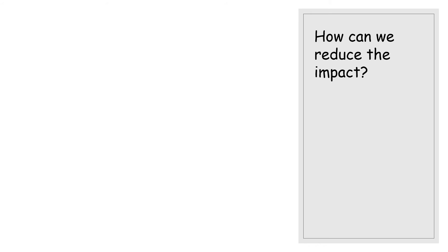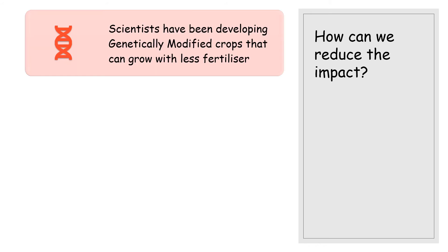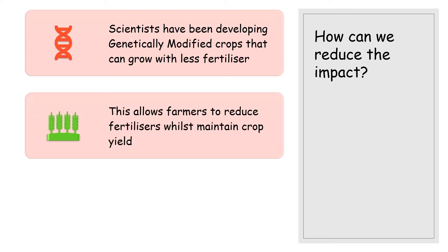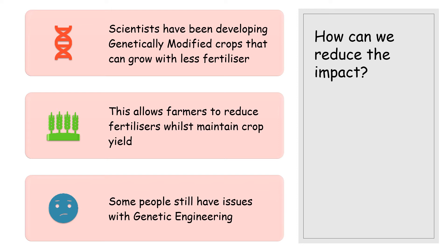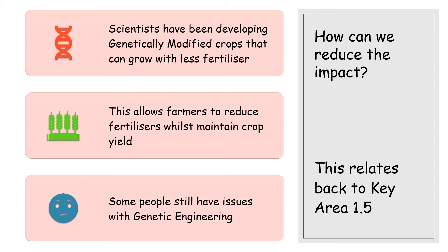One way to reduce that impact is through genetic engineering. Scientists have developed genetically modified crops that can grow with less fertilizer, meaning farmers can use less while still getting good crop yield. However, people still have concerns with genetic engineering, especially putting GM organisms into the food chain. This relates back to Key Area 1.5 where we discussed genetic engineering and the ethical considerations involved.